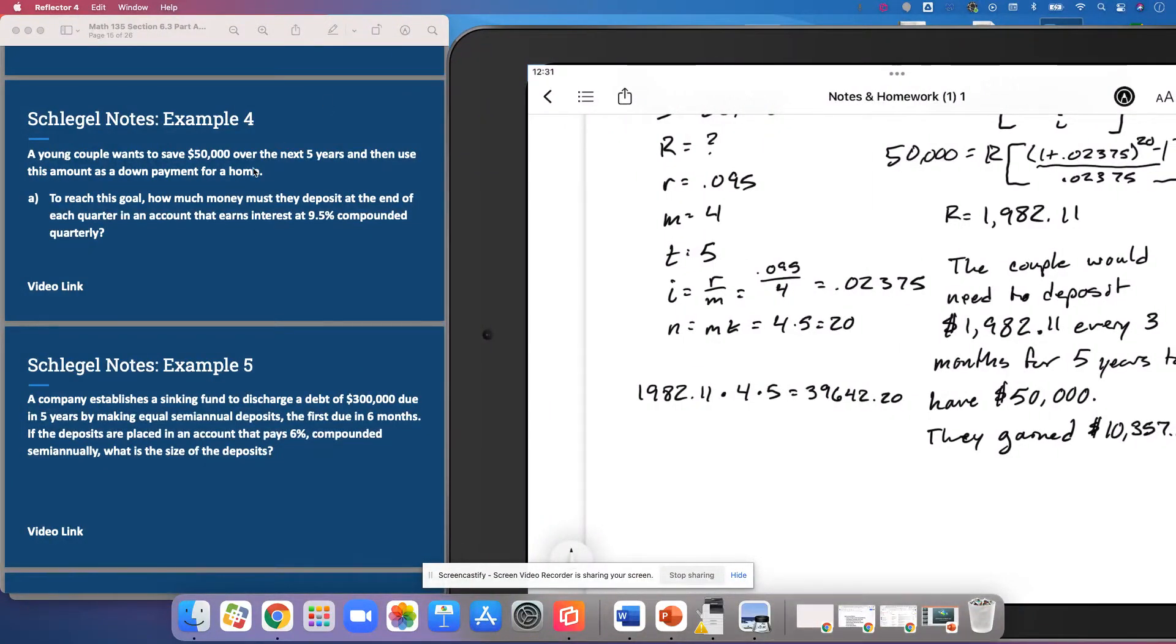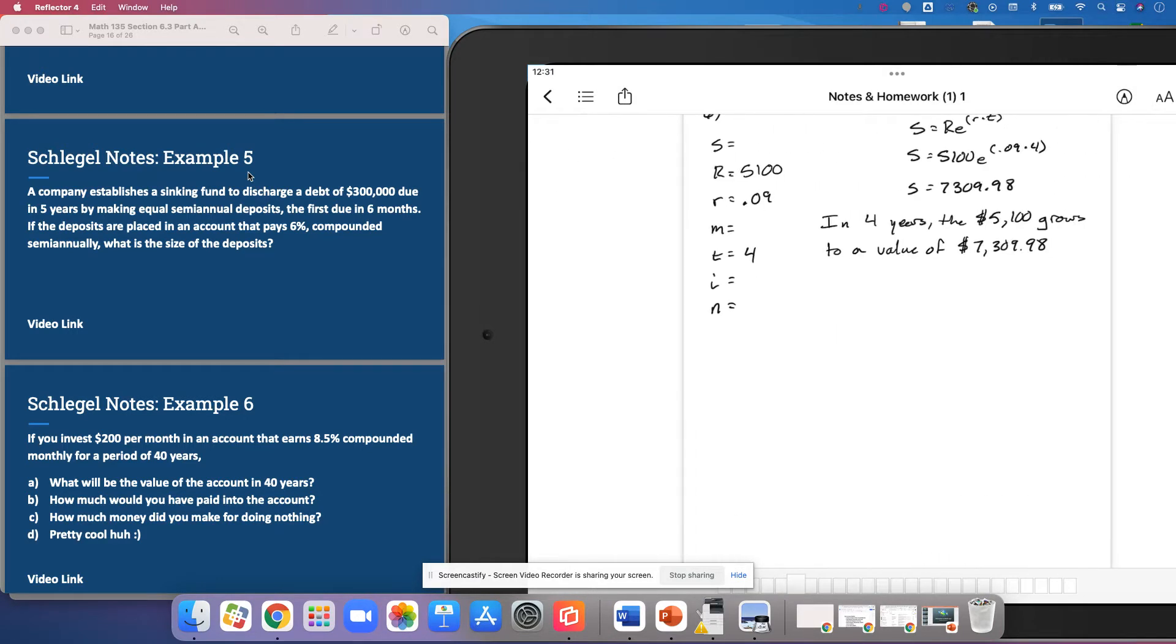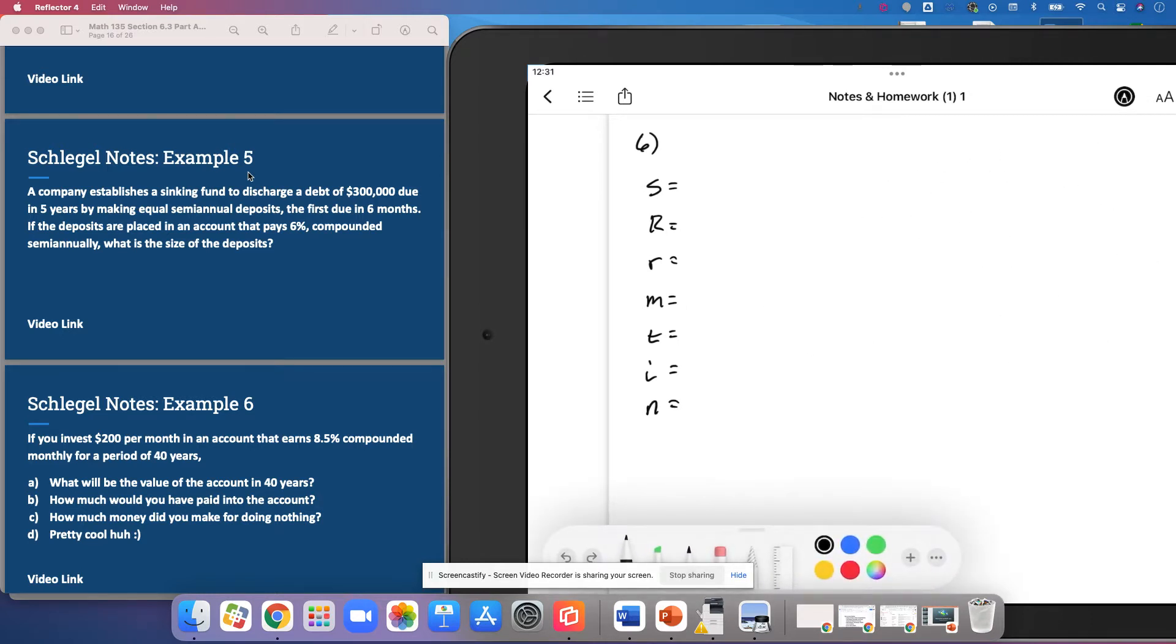Coming back to the game here everyone with example 5. A company establishes a sinking fund. So a sinking fund to my understanding is basically a fund where you're like, hey I know that I've got a huge bill coming, so let's start saving money now so that we can pay that bill once it lands. And so this company is basically preparing to have money available so that they can pay off a giant bill. And this is number 5, so let me change that.